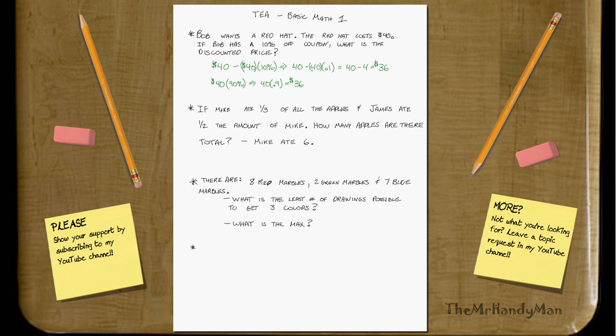Let's move on to the next problem. If Mike ate one-third of all the apples, and James ate one-half of the amount of Mike, how many apples are there total? Mike ate six.